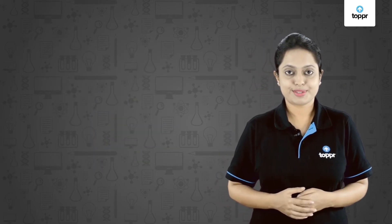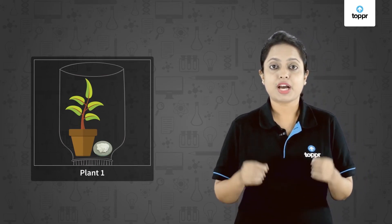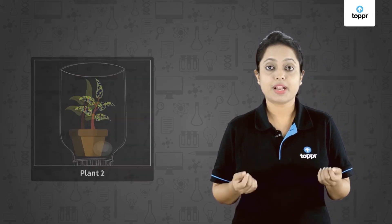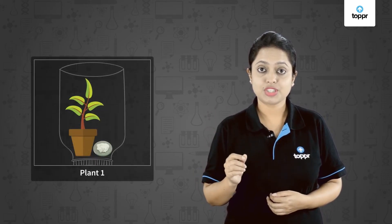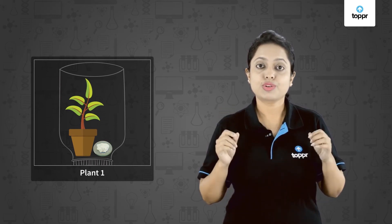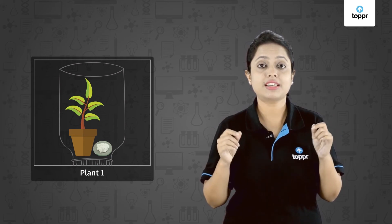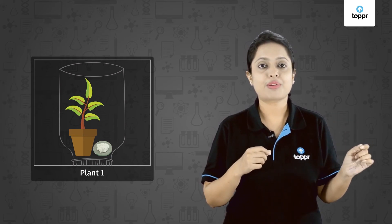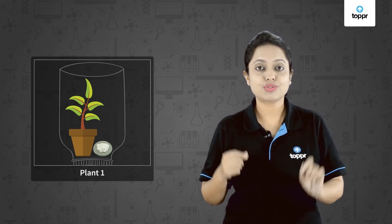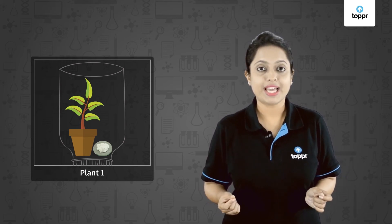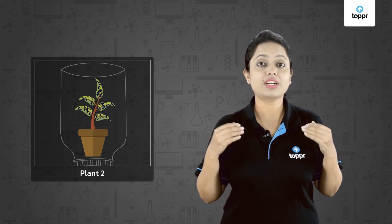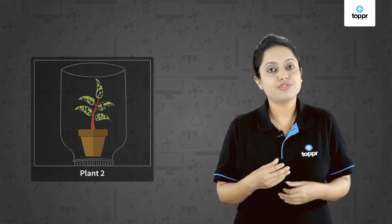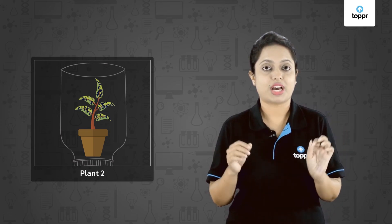After three hours, we test the presence of starch in the leaves of both plants. Plant one does not contain starch, while plant two confirms the presence of starch. Plant one, which had potassium hydroxide in its jar, could not utilize the carbon dioxide present inside, as potassium hydroxide absorbed it — so the plant could not photosynthesize. Plant two, without potassium hydroxide, utilized all the carbon dioxide in the jar, photosynthesized, and confirmed the presence of starch.